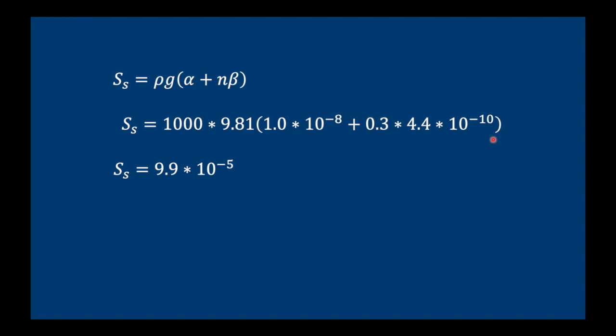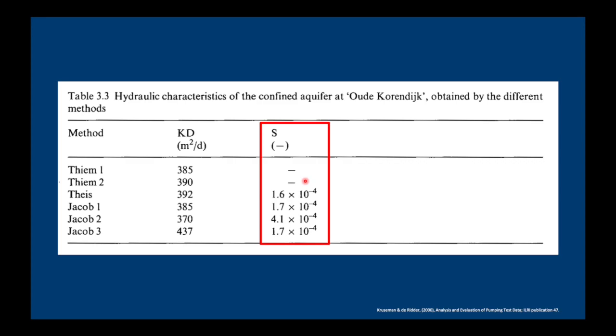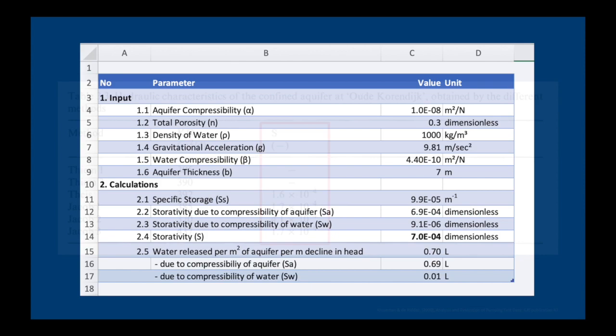Now, this specific storage works out at 9.9 times 10 to the minus 5. And if we times it by the aquifer thickness b, which is 7, we end up with 7 times 10 to the minus 4. When you see 10 to the minus 4, it usually means that we have a confined aquifer. And in fact, this is the numbers that we have from the pumping test in Kruseman and de Ridder.